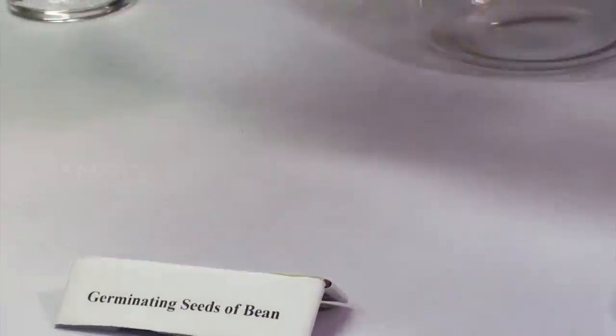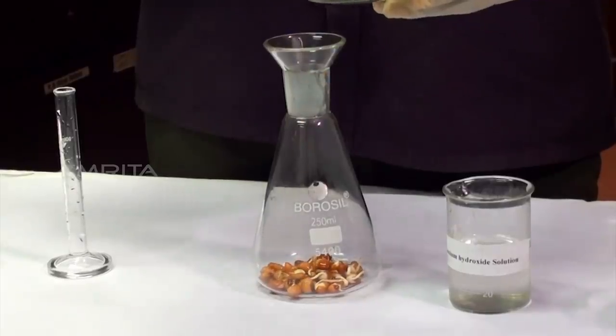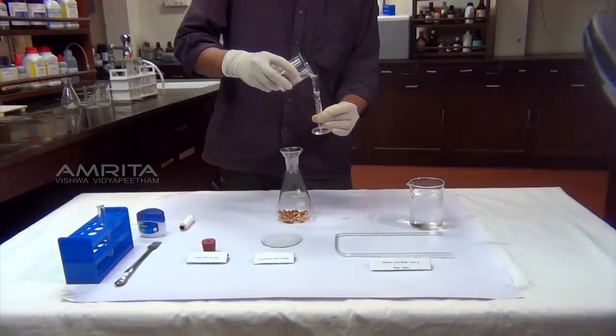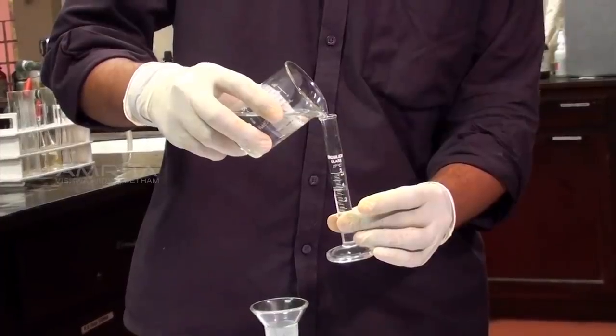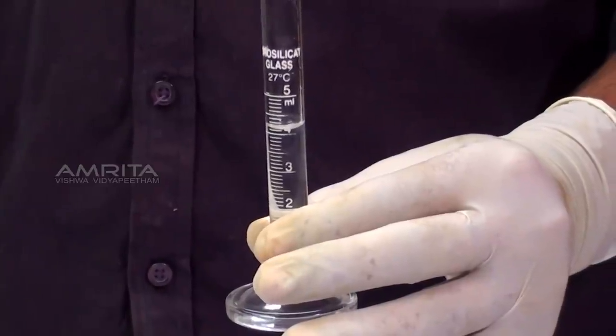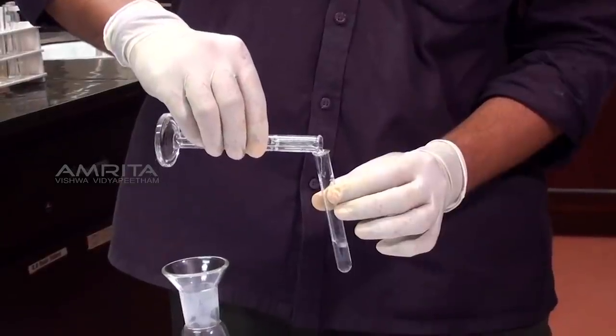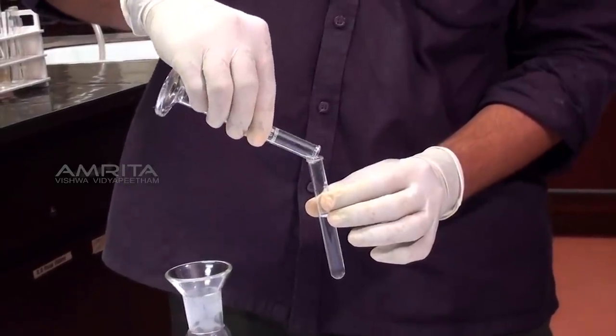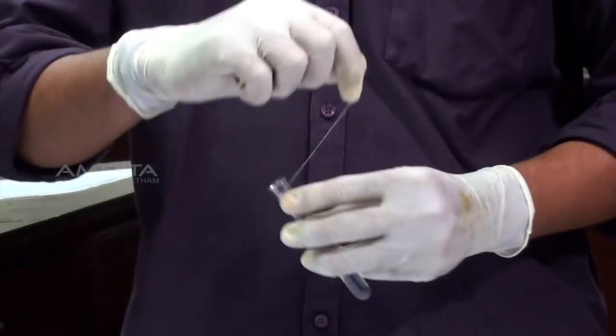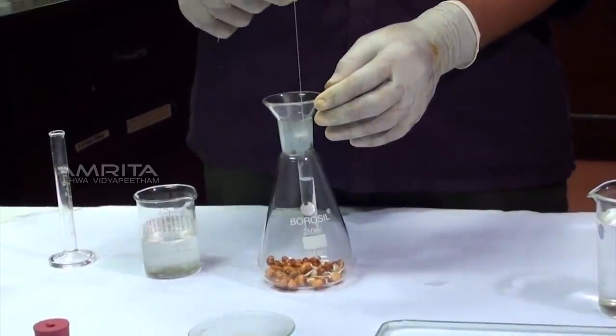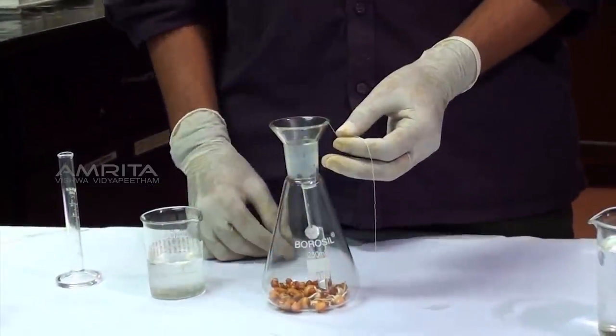Procedure: Using a spatula, place about 30 germinating bean seeds in a conical flask. Pour 4 ml of potassium hydroxide solution into a measuring cylinder. Transfer the potassium hydroxide solution from the measuring cylinder into a small test tube. Tie a cotton thread around the neck of the test tube. Suspend the test tube in the conical flask above the germinating seeds.